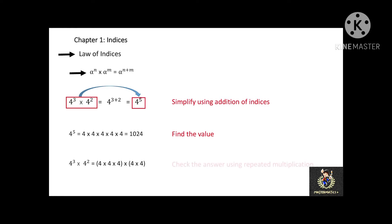We can also check the answer using repeated multiplication. 4 to the power of 3 equals 4 times 4 times 4, and 4 to the power of 2 equals 4 times 4. That gives 64 times 16, and you will get the same answer: 1024.